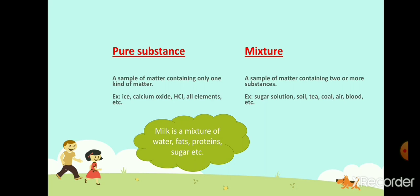Whereas, a sample of matter containing two or more substances is called a mixture. For example, sugar solution, soil, tea, coal, air, blood — they all consist of two or more substances in them. Therefore, they are called mixtures.